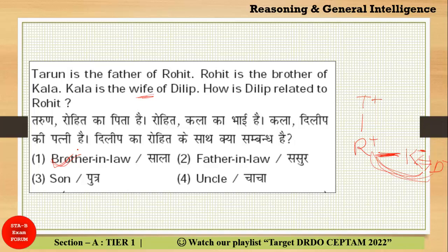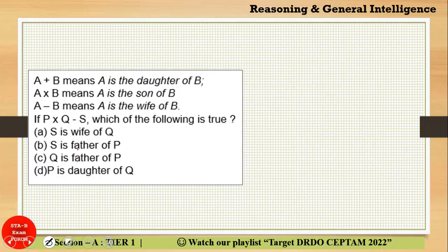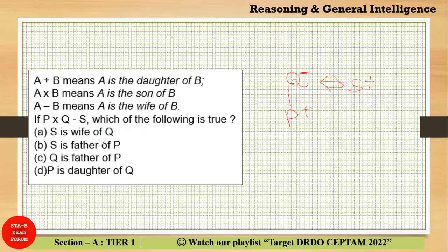The third question is a coded relation type. 'P → Q' where '→' means 'son of,' so P is son of Q. 'Q − S' where '−' means 'wife,' so Q is wife of S — meaning Q is female and S is male. P is son of Q, and Q is wife of S. Now checking the options: 'S is wife of Q' — no, S is husband of Q. 'S is father of P' — yes, this is correct. S is the father of P.